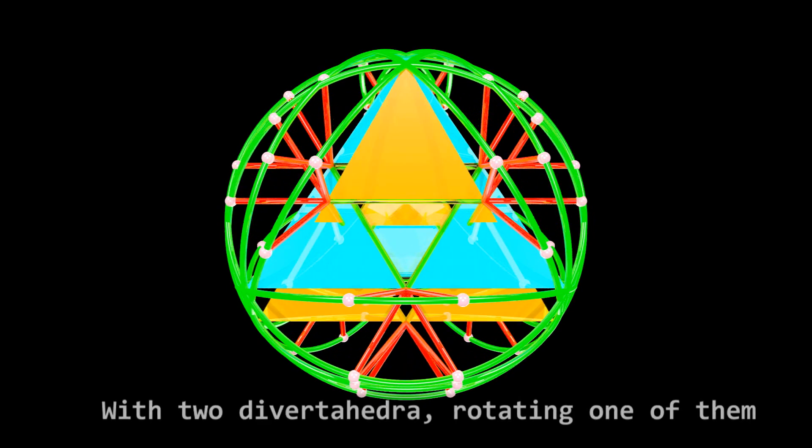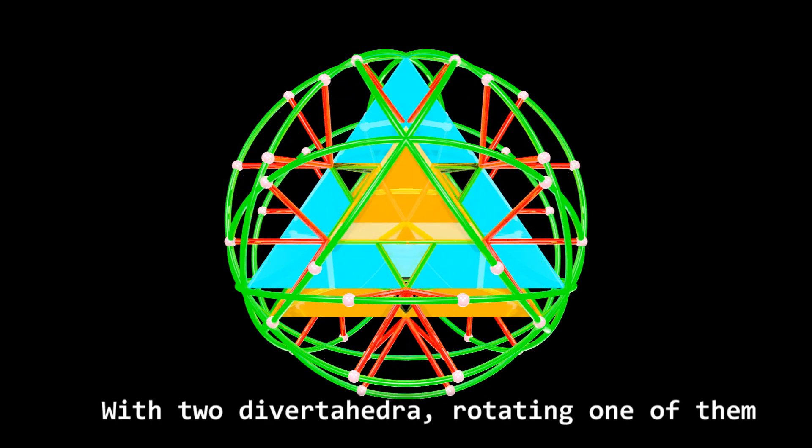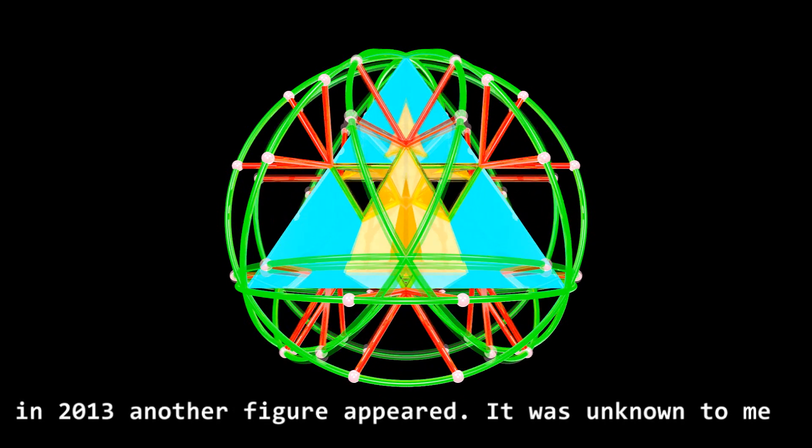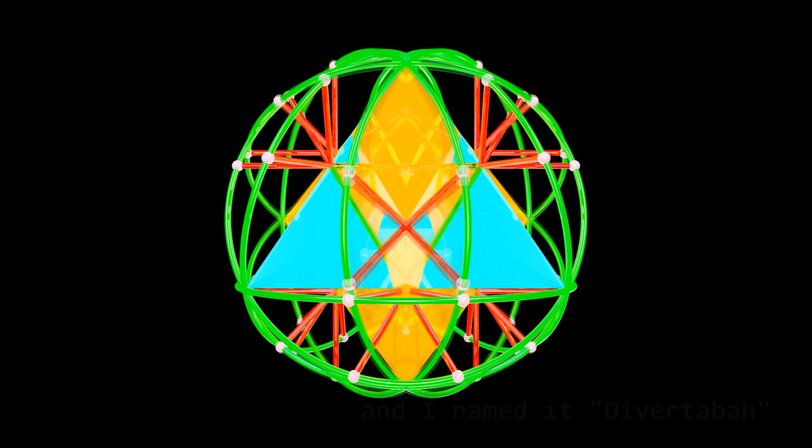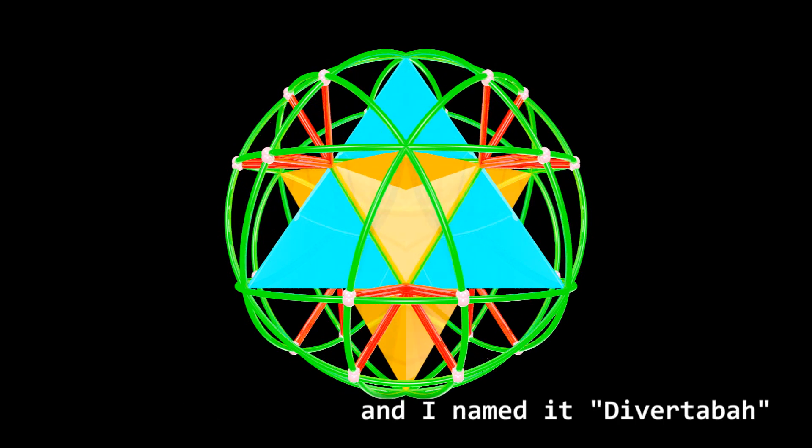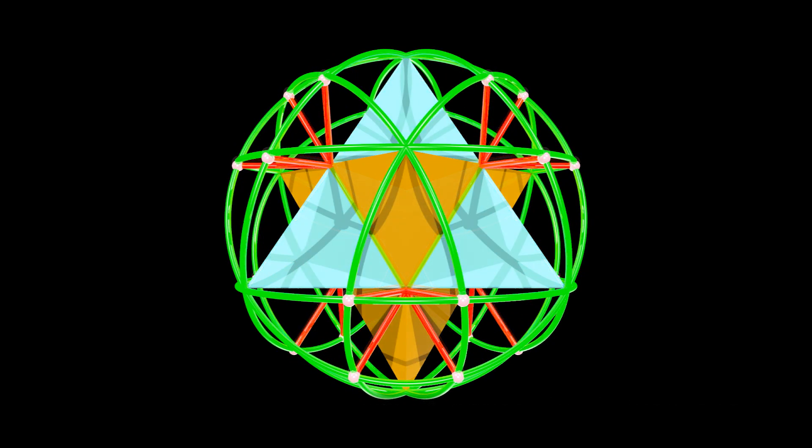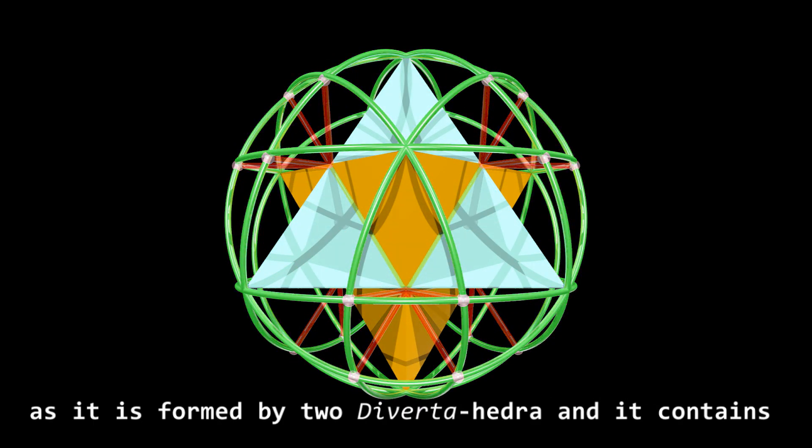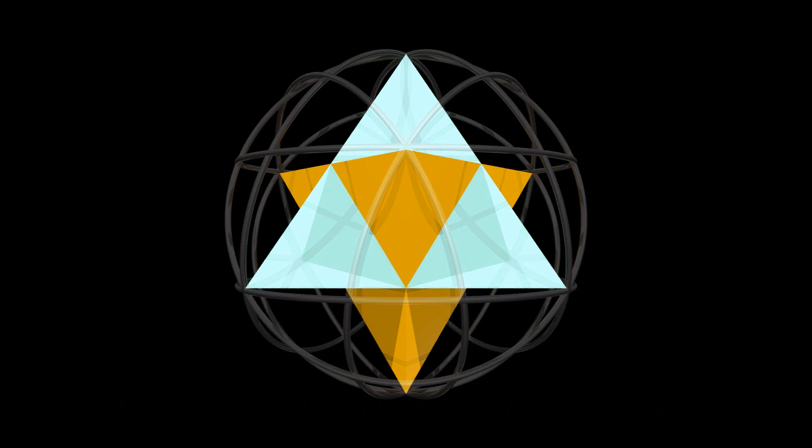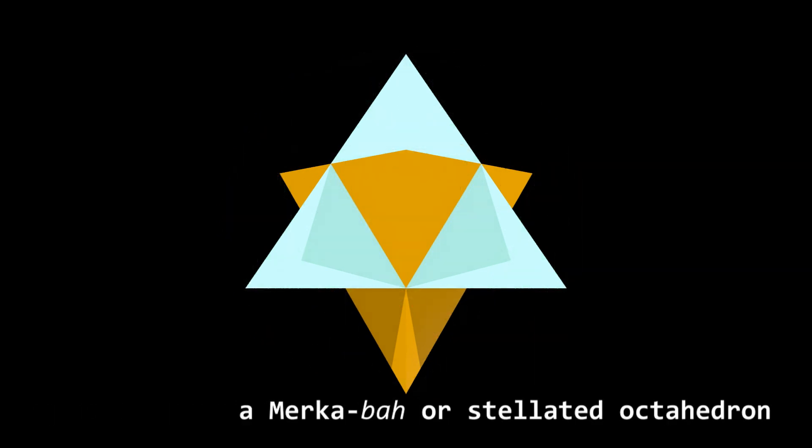With two Dibertahedra, rotating one of them, in 2013 another figure appeared. It was unknown to me and I named it Dibertabar, as it is formed by two Dibertahedra and it contains a Metatron's Cube or stellated octahedron.